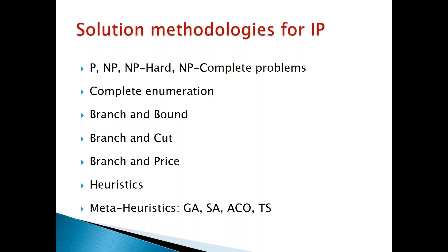All optimization problems can be broadly classified into two categories: P-category and NP-category. P problems are easier problems — easy to solve. Whatever the size of the problem, it should be possible to solve those problems in a reasonable amount of time. If we can develop a polynomial expression to represent the time taken to solve the problem, it's called a P-category problem, meaning computational time can be expressed as a polynomial with respect to the size of the problem.